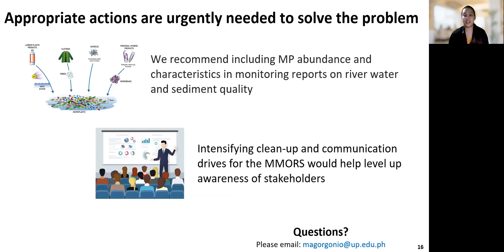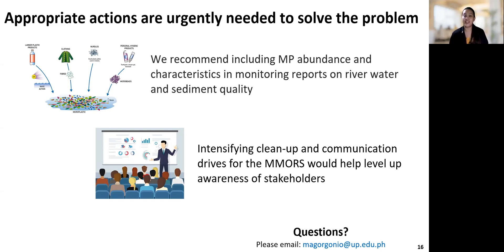We suggest that this baseline evidence be followed through during monitoring of river water and sediment quality. Specifically, we recommend including MP abundance and characteristics in monitoring reports, and when possible, baseline evidence could also be obtained from other areas of the river system. Results from this study may be used to inform stakeholders of the status of the MMORS in terms of presence of MPs, and to intensify cleanup and communication drives for the river system, since it is a high-priority water quality management area. Thank you very much for listening.